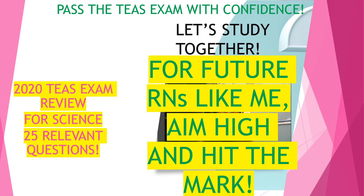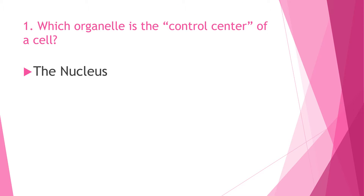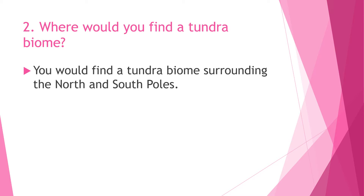Question 1: Which organelle is the control center of a cell? The answer is the nucleus. Question 2: Where would you find a tundra biome? You would find a tundra biome surrounding the north and south poles.